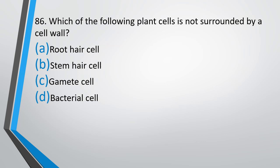Question number 86. Which of the following plant cell is not surrounded by a cell wall? Root hair cell, stem hair cell, gamete cell, bacterial cell. The correct answer is option C, that is gamete cell.